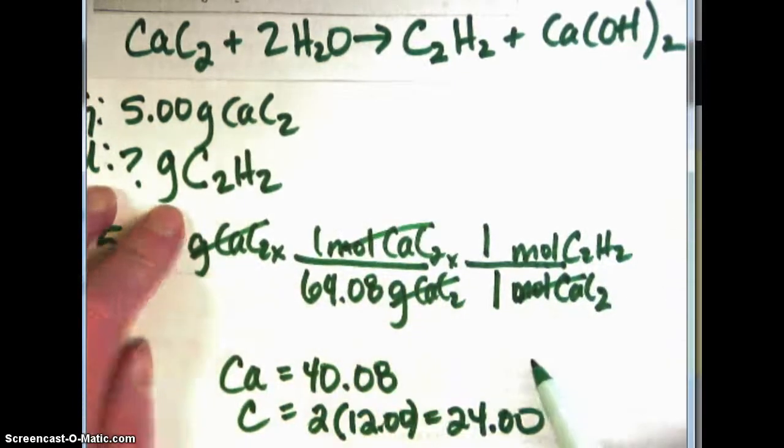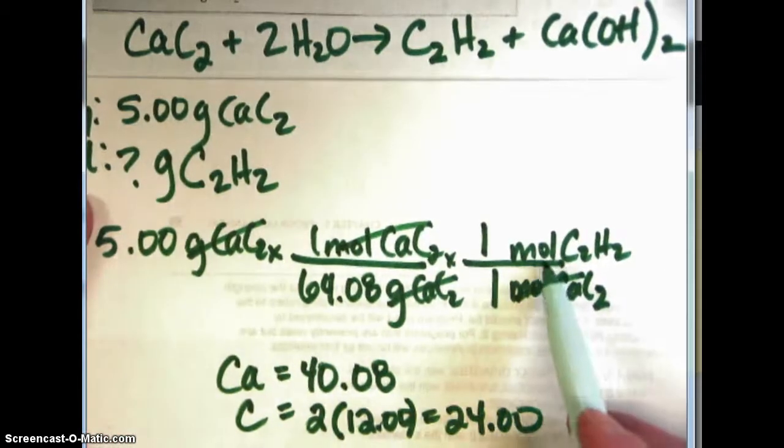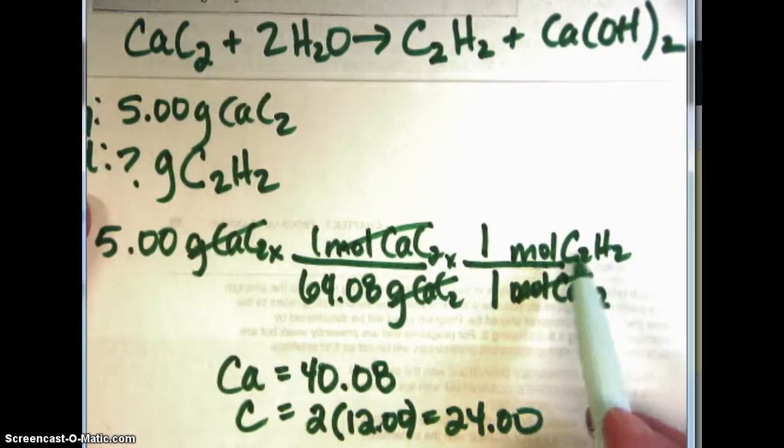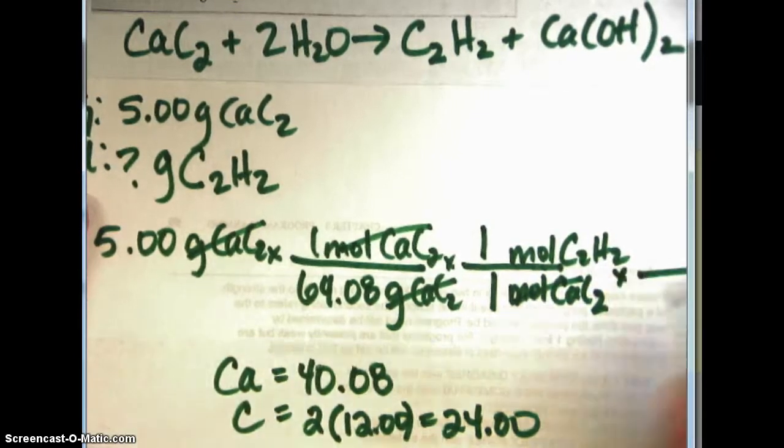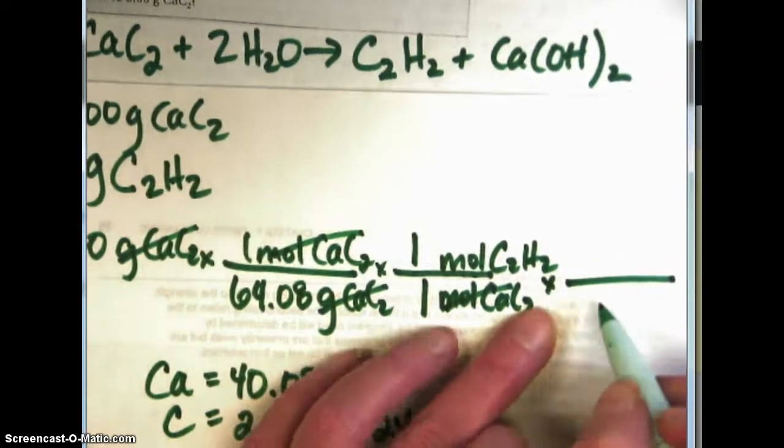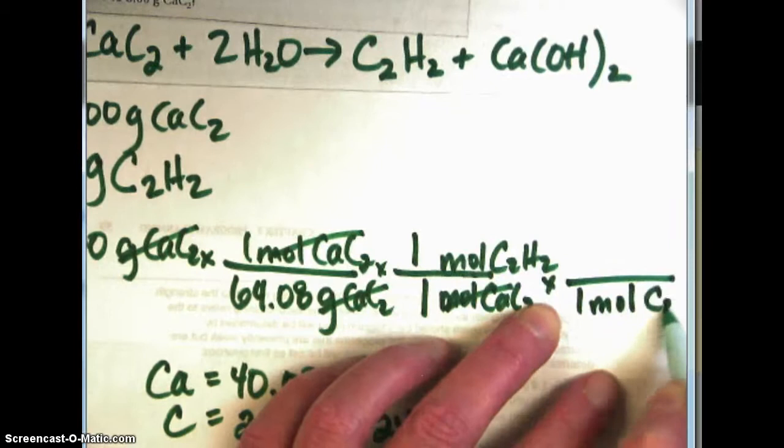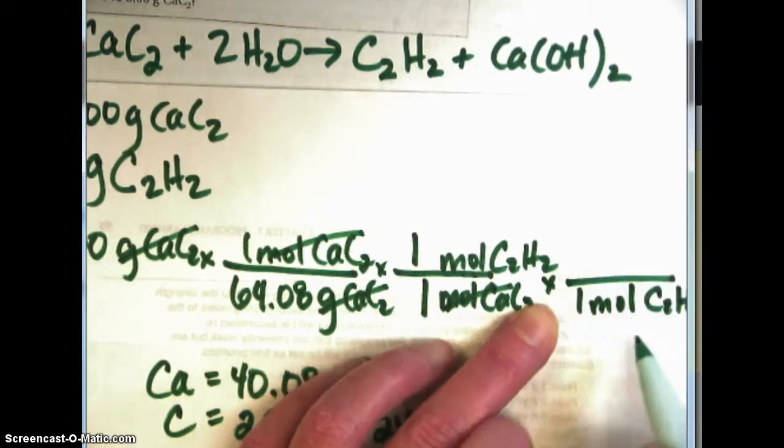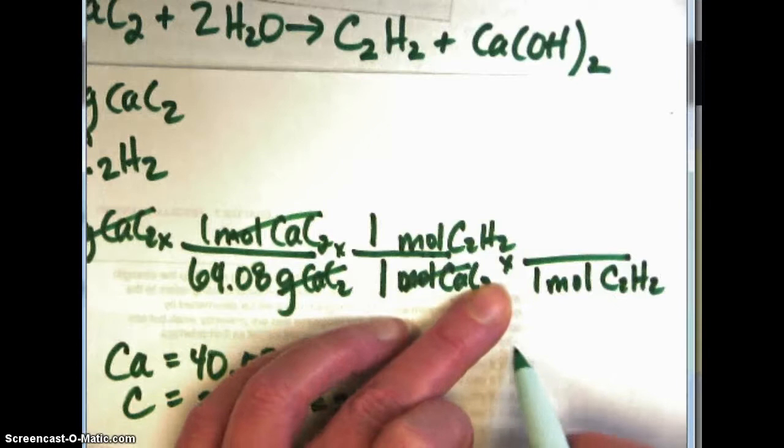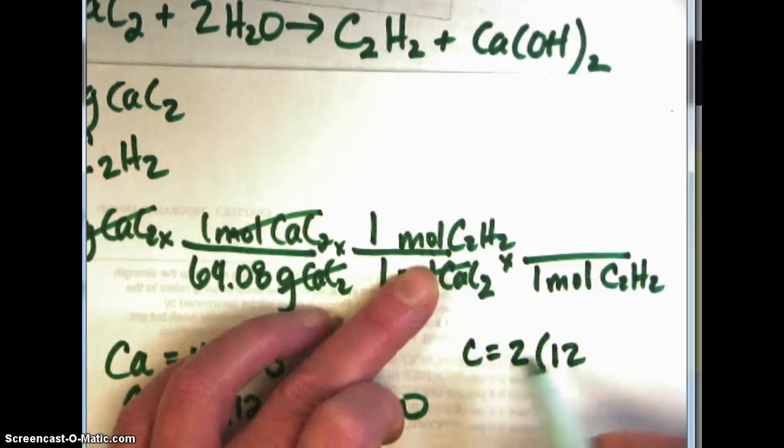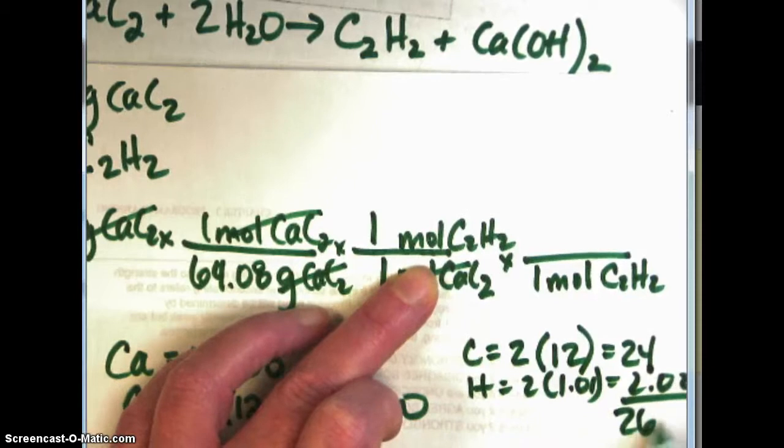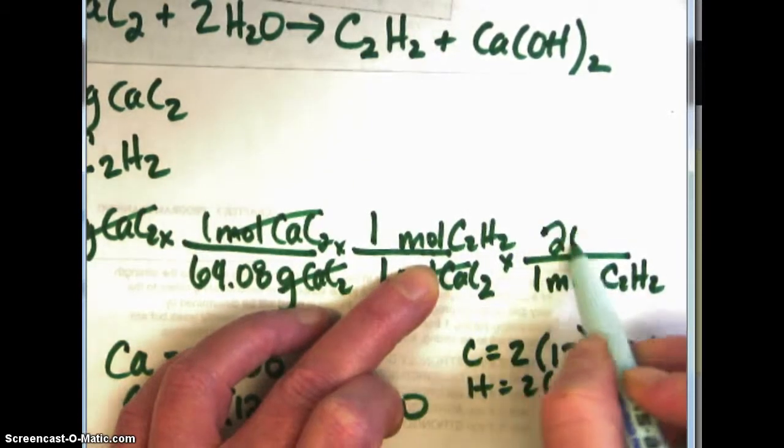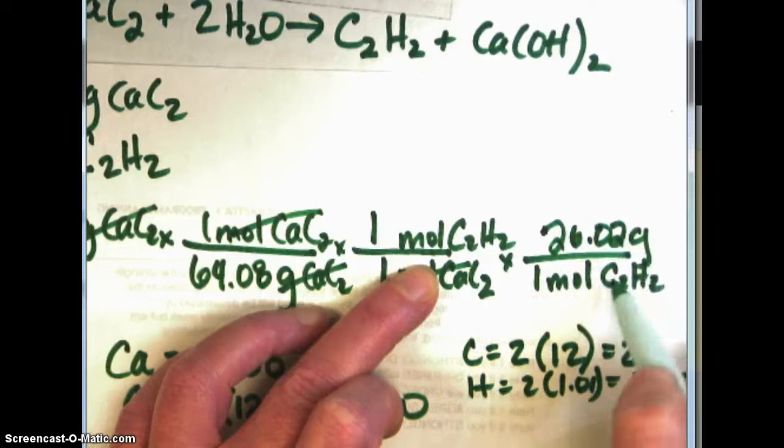Those moles cancel and if I asked how many moles of acetylene gas would be produced I would stop there but I asked how many grams so I've got to convert from moles of acetylene gas to grams using once again the molar mass but in this case of acetylene grams so I'm going to have one mole of C₂H₂ to I've got to figure out the molar mass so there's 2 times 12 for carbon that's 24 and hydrogen that's 2 times 1.01 so that's 26.02 grams to one mole of C₂H₂.